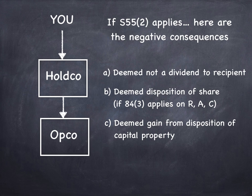So to sum it up, if 55.2 applies, the negative consequences are: if it's just a normal dividend, it's deemed not to be a dividend to the recipient and it's deemed to be a gain from disposition of capital property — that's (a) and (c). (b) only applies to 84.3 type transactions where there's a redemption, acquisition, or cancellation for a price above the PUC, and then it's a deemed disposition of the share, i.e. a capital gain.